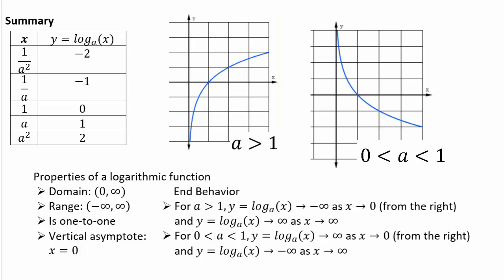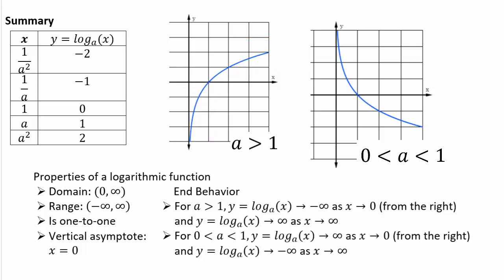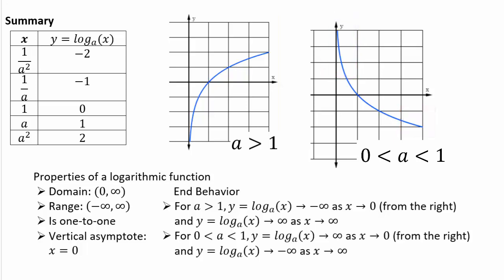In summary: log base a of x is the inverse function of a to the power x. If a is greater than 1, the graph has end behavior where as x goes to 0 from the right the function goes to negative infinity, and as x goes to infinity f of x goes to infinity. If a is between 0 and 1, as x goes to 0 from the right the function goes to positive infinity, and as x goes to infinity the function goes to negative infinity. The vertical asymptote for both cases is x = 0. Both functions are one-to-one, their inverse is the exponential function a to the power x, the domain is (0, ∞), and the range is (−∞, ∞).